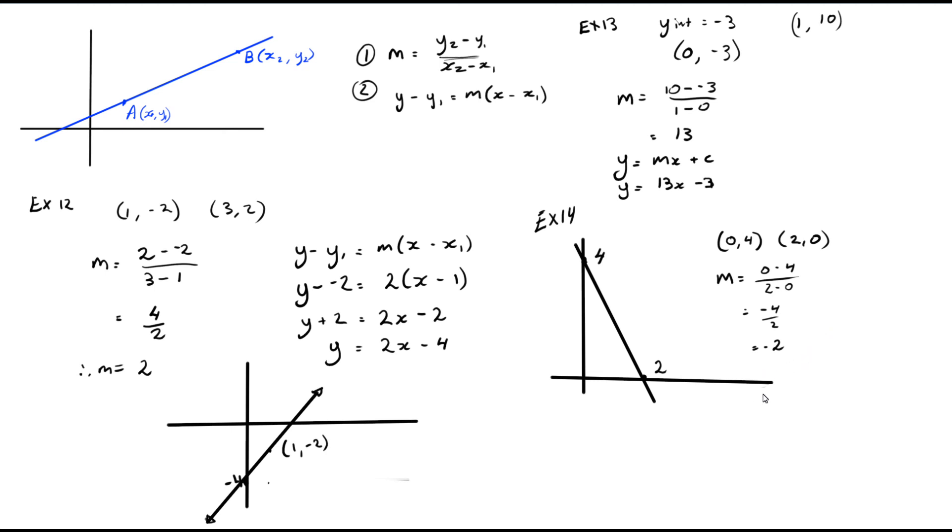And from there we can say y take y1 equals m x take x1. So we'll have y take y1, which will be 4, equals minus 2 x take x1, which is 0, so we get y take 4 equals minus 2x. And then if we add 4 to both sides, we get y equals minus 2x plus 4. So sometimes the two points are given as the intercepts, so you just work it out the same way as we have been.